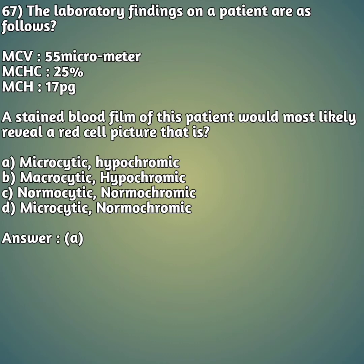Moving to our 67th question - also a case study. Laboratory findings: MCV is 55 µm³, MCHC is 25%, MCH is 17 picograms. A stained blood film of this patient would most likely reveal a red cell picture that is - option A: microcytic hypochromic. Option B: macrocytic hypochromic. Option C: normocytic normochromic. Option D: microcytic normochromic. The right answer is answer A - microcytic hypochromic.